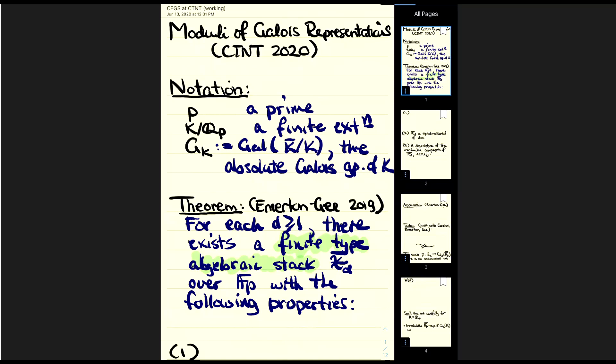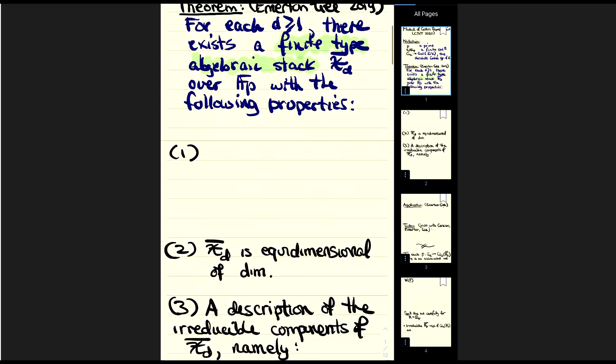I also want to mention that I've put a bar on top of X_D. You might imagine there's also a p-adic version of this theorem, but I'm just going to state the F_p version. So what are the properties of this X_D?